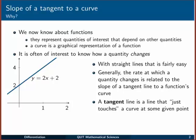With straight lines, figuring out how the quantity changes with respect to its independent variable is quite easy. The slope is the number multiplied by x — the 2 — and that tells us if we move one unit in the x direction, then our function will move up two units: two for every one. So with straight lines it's pretty easy.